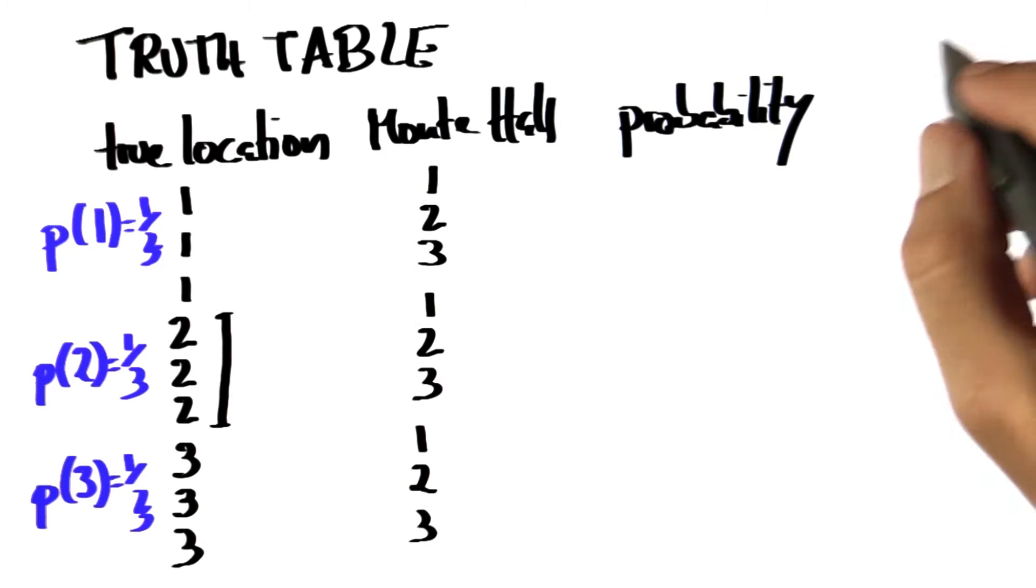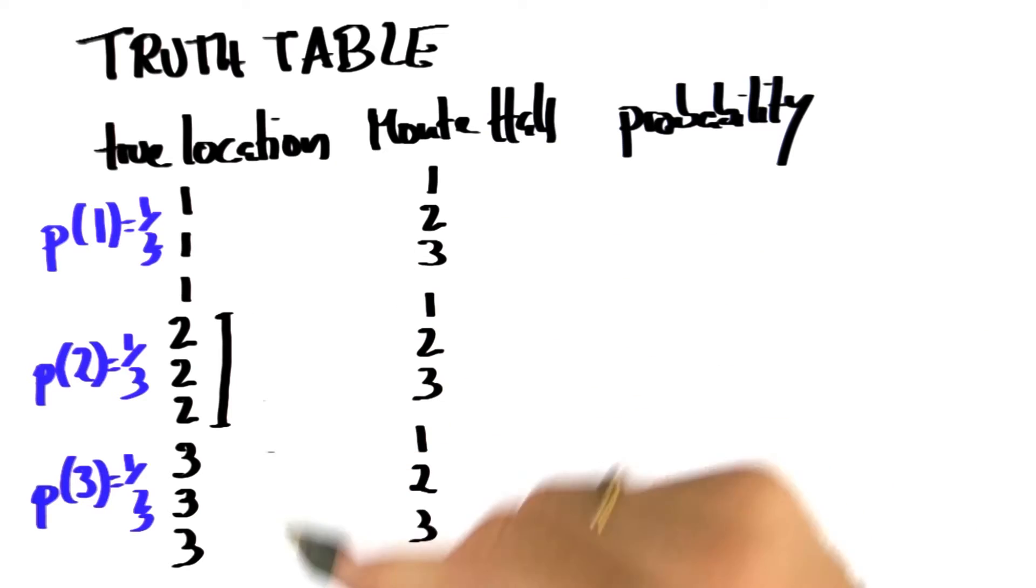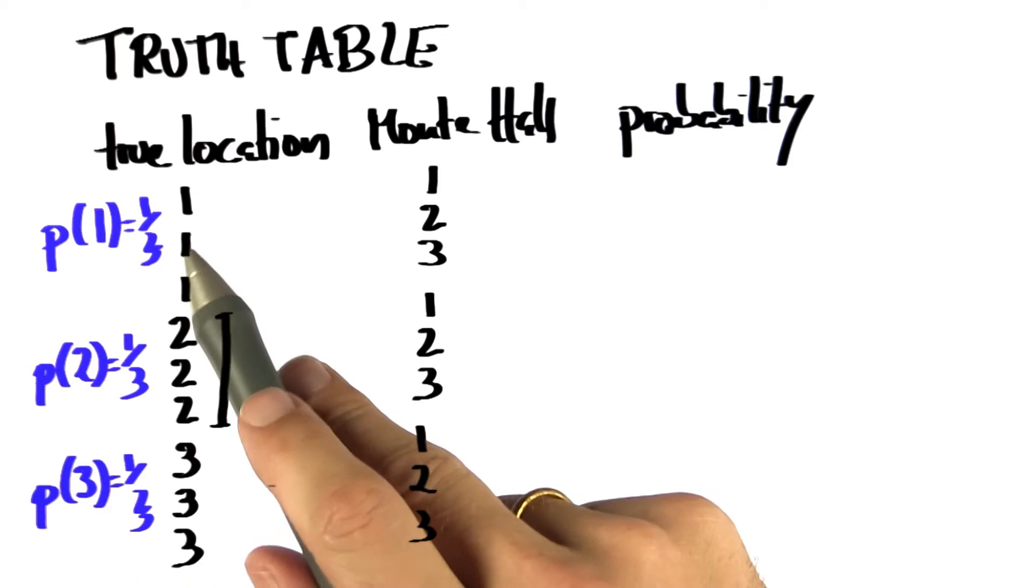So now I have all the combinations of the true location and the door I'm being shown. Now, let's talk about the probabilities of each of these entries.